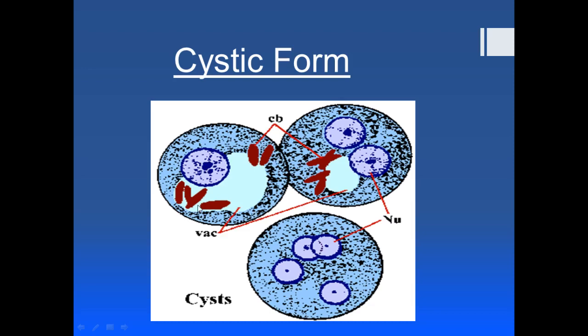This early cystic form then converts into the mature cystic form. The nucleus divides into two, and then again into two, forming four nuclei total — you can see four nuclei in the mature cystic form, whereas only one is present in the early cystic form. The chromidial bars and glycogen mass disappear in the mature cyst. This mature cyst is then excreted in the feces, contaminates food, and causes infection again. So that covers the morphology: trophozoite, pre-cystic, early cystic, and mature cystic forms.